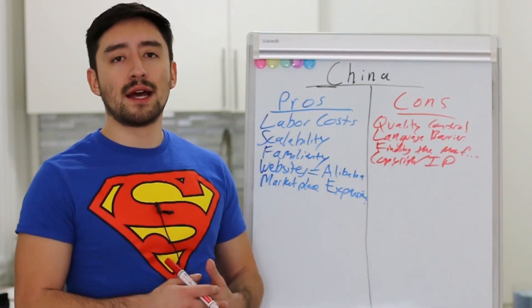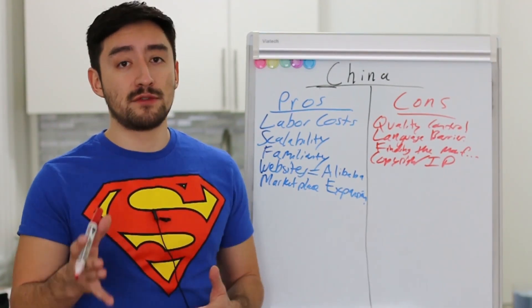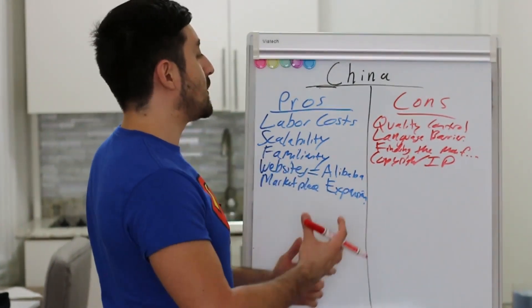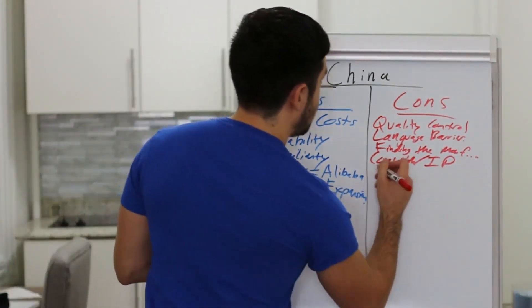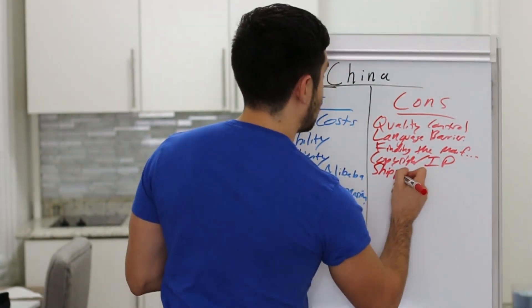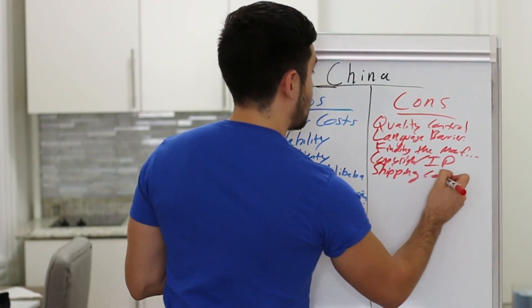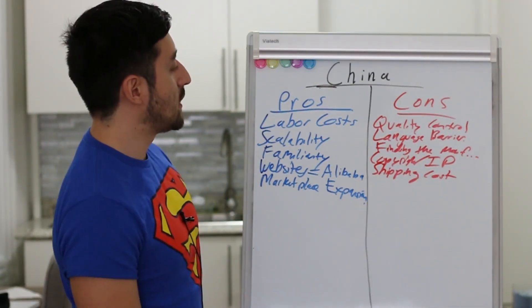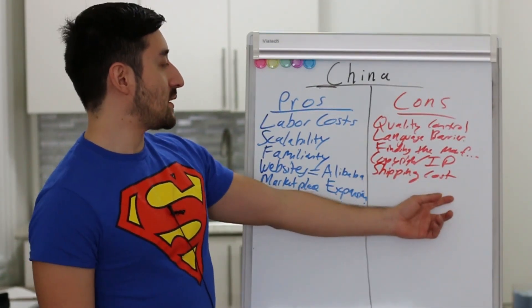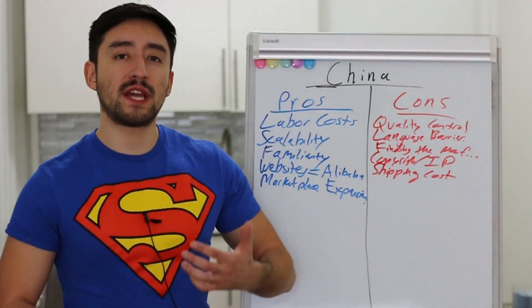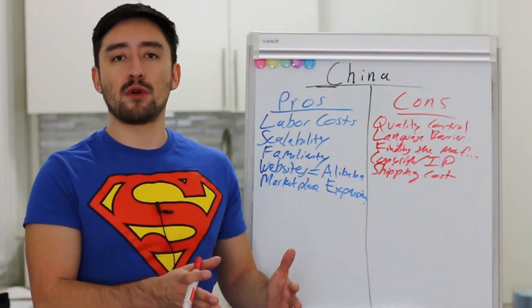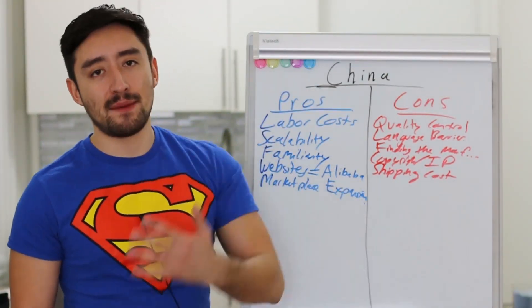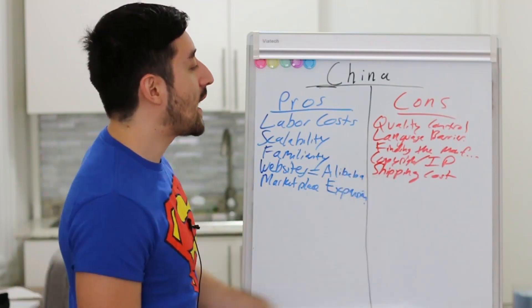Because China is so far away from the United States and probably wherever country you're from, there are naturally going to be shipping costs to get the product into the hands of your fulfillment provider or your customers. Shipping costs will impact the total cost of creating the product and thus your profit margins and the viability of your business. The fact that China is so far away means it takes time to get the products to you, which also adds to your shipping costs.